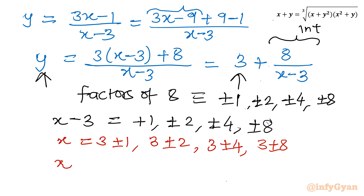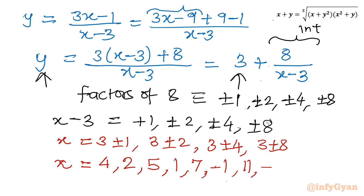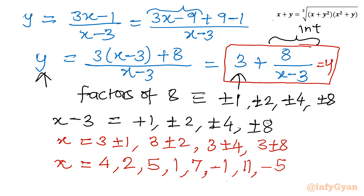Computing all x values: 3+1=4, 3−1=2, 3+2=5, 3−2=1, 3+4=7, 3−4=−1, 3+8=11, and 3−8=−5. So our eight x values are: 4, 2, 5, 1, 7, −1, 11, and −5. Now we substitute each into y = 3 + 8/(x − 3) to find the corresponding y values.